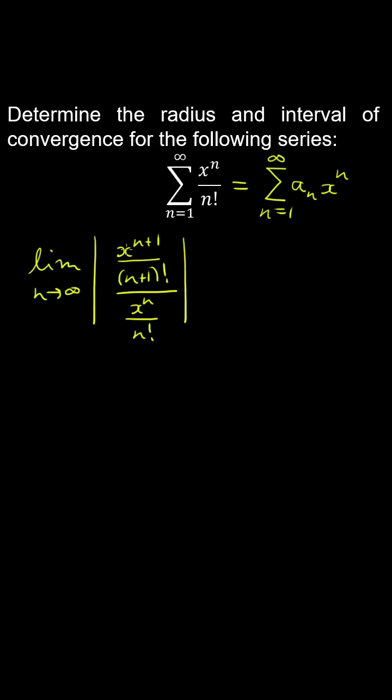We take the absolute value because x can be negative, and the ratio test applies only if this ratio is positive. We're doing a bit of algebra.